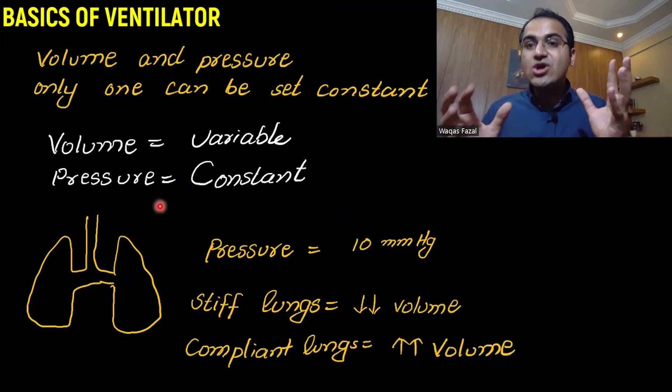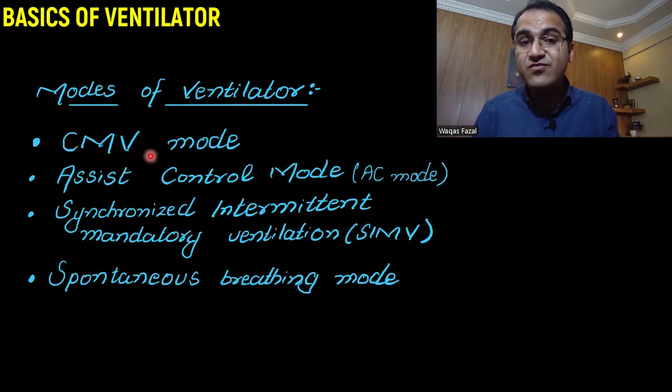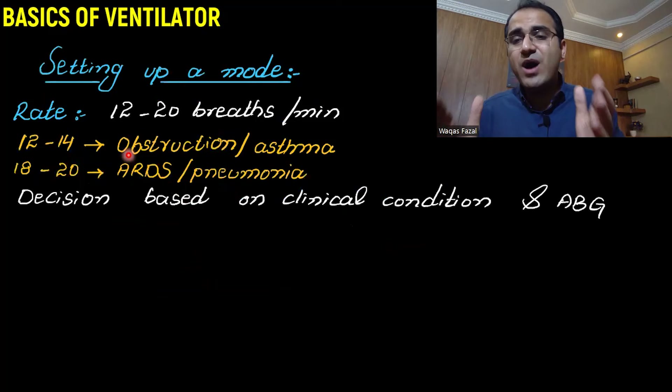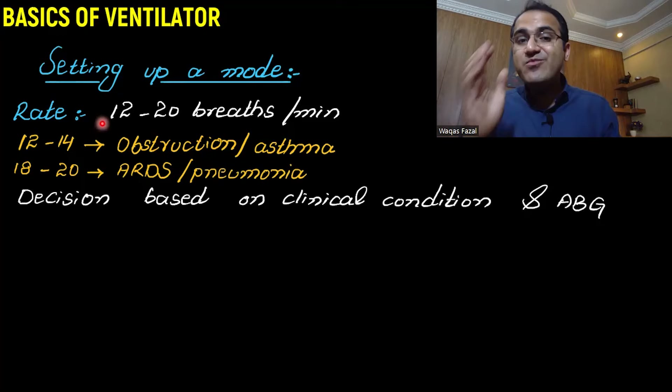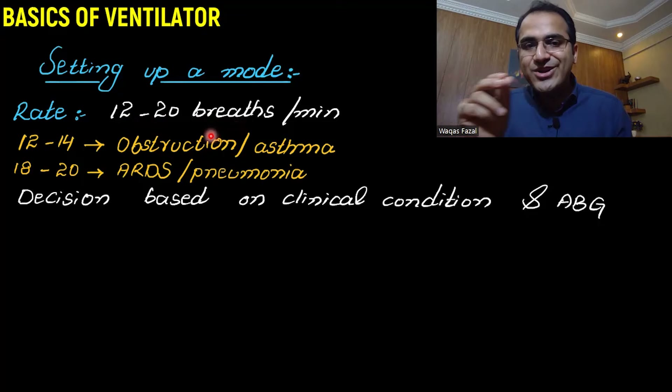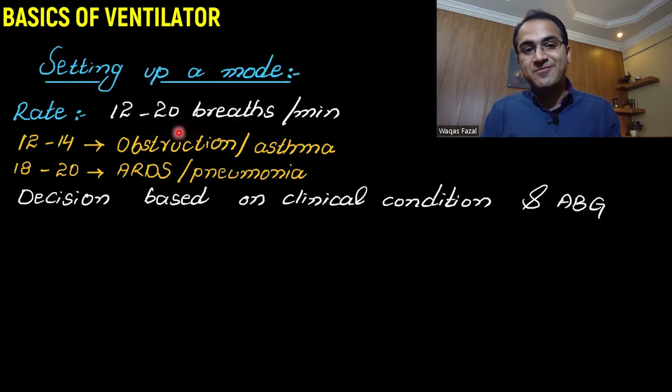Now that we understand volume and pressure, let's apply it to the modes of ventilation: CMV mode, assist control mode, synchronized intermittent mandatory ventilation mode, and spontaneous breathing mode. Before setting a mode, you set the rate at which breaths are given. We normally breathe at 12 to 20 breaths per minute, and we set the ventilator rate similarly.